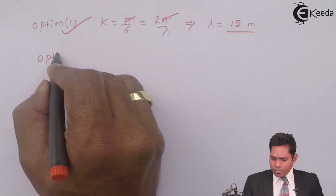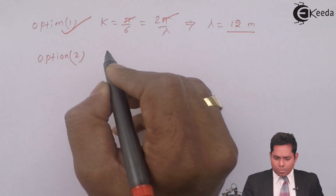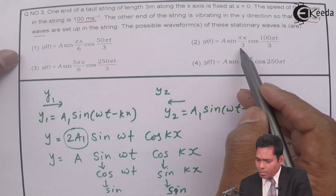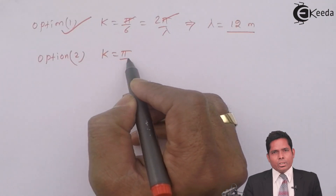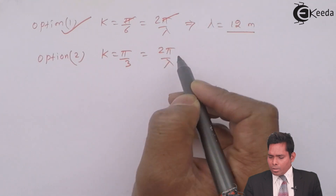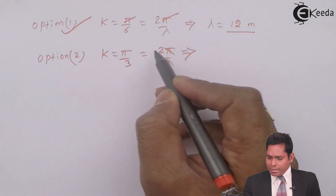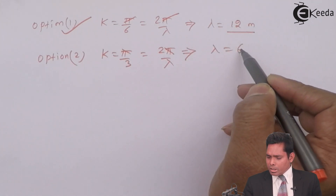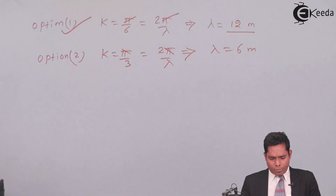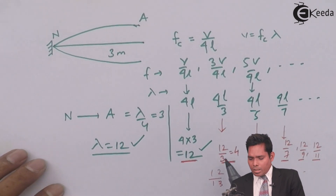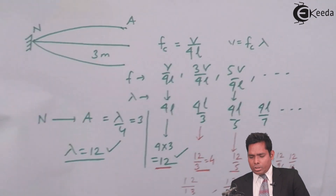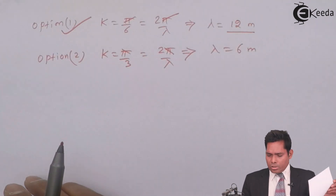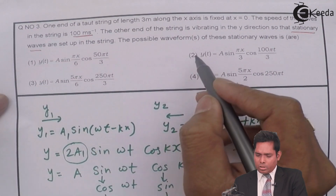For option 2, k = π/3. Using k = 2π/λ gives λ = 6. Unfortunately, λ = 6 is not in our list — after 12, the next valid wavelength is 4, not 6. Therefore this stationary wave equation is not possible, and option 2 is wrong.